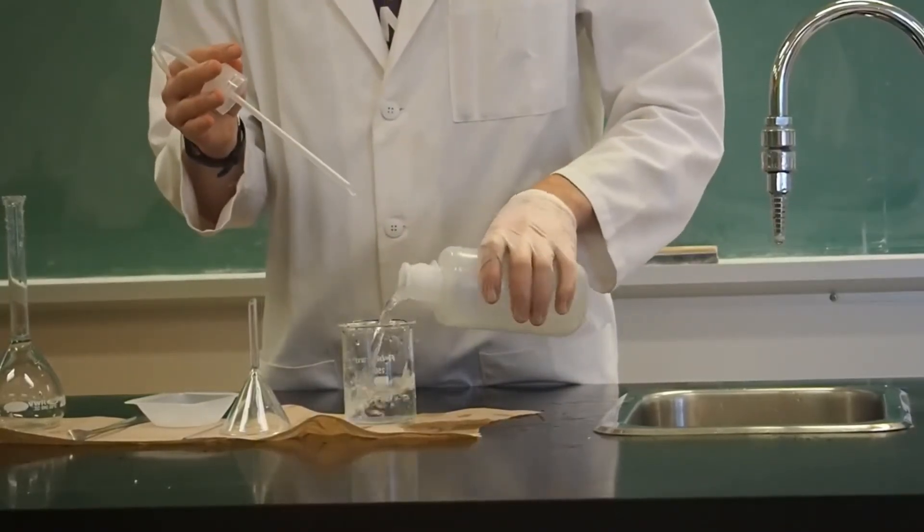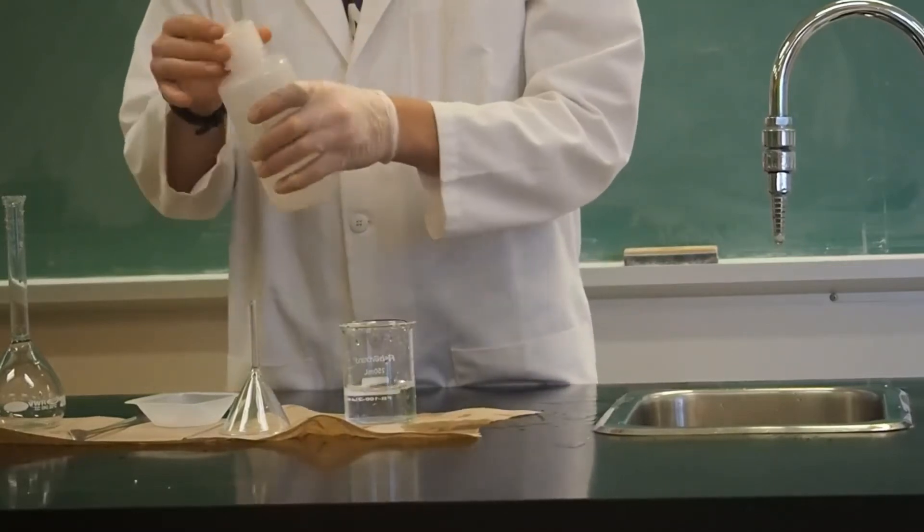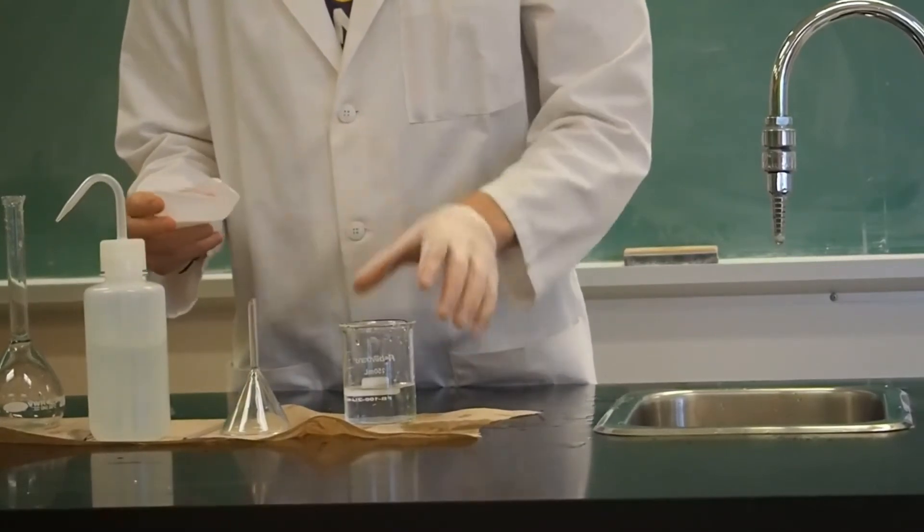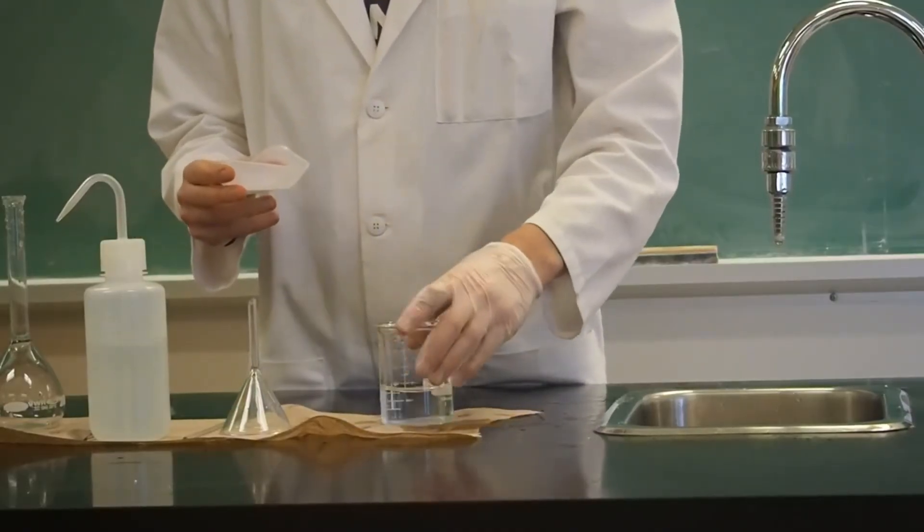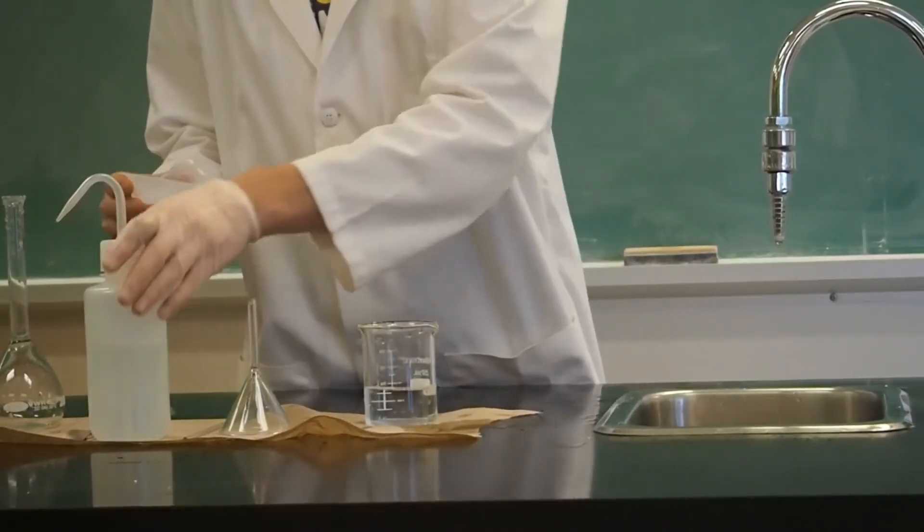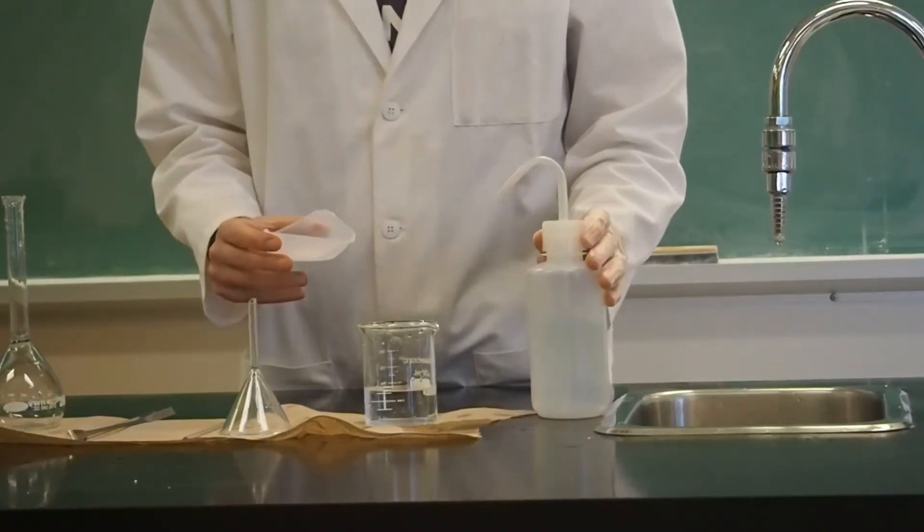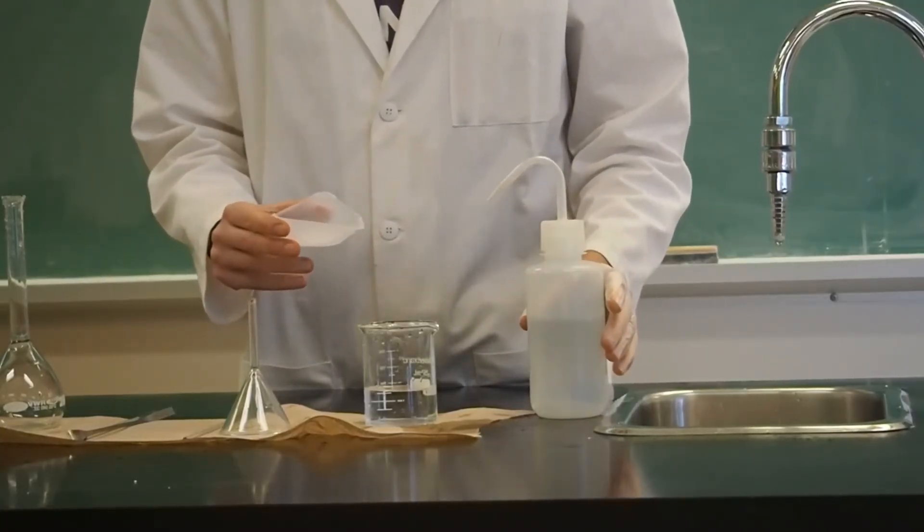Next step is to dissolve the solute. Put a small amount of deionized water into your 250 milliliter beaker. Do not put in too much as you want to use the minimum amount of water needed to get the solute dissolved.